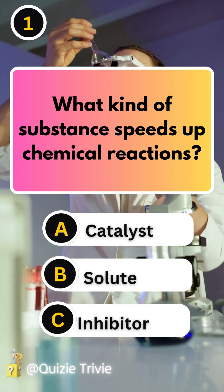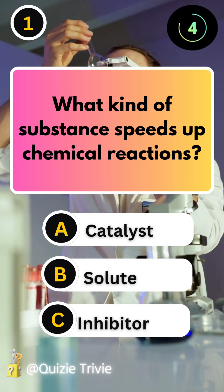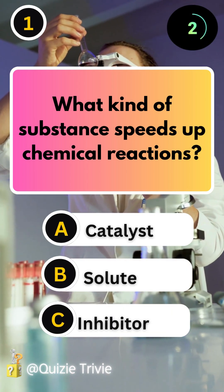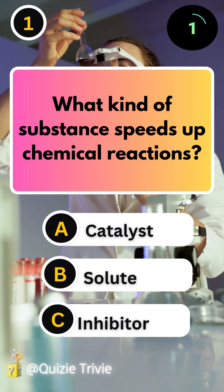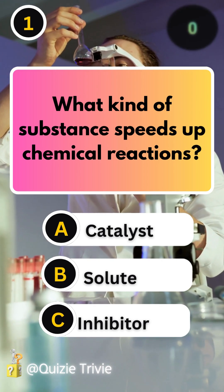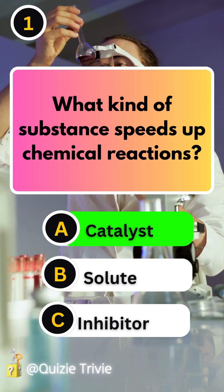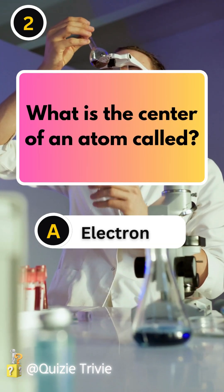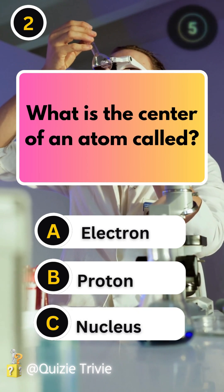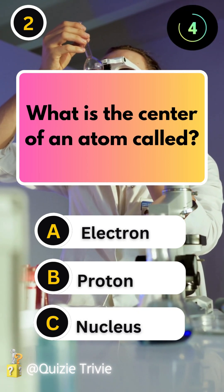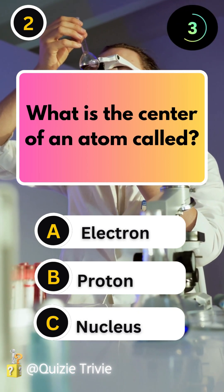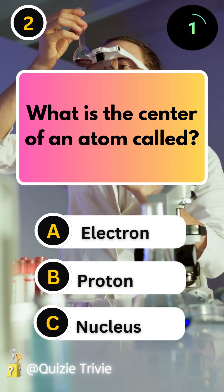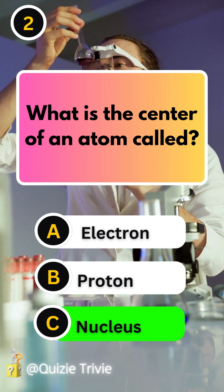What kind of substance speeds up chemical reactions? Catalyst. What is the center of an atom called? Nucleus.